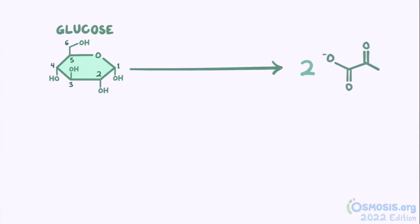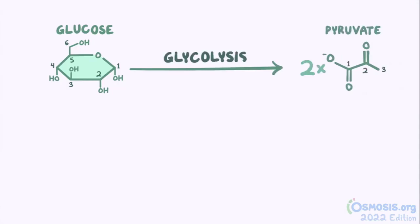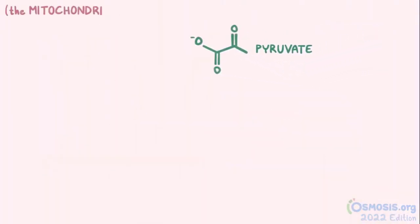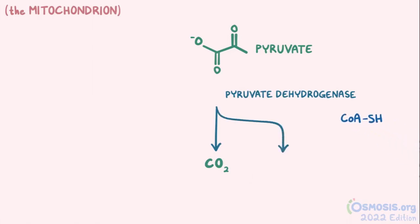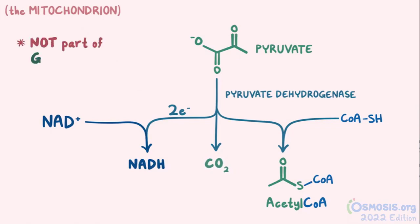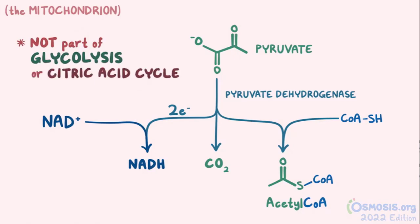Taking the case of glucose: after a meal, one glucose — a 6-carbon molecule — splits into two 3-carbon pyruvate molecules through glycolysis, which happens in the cytoplasm of the cell. Each pyruvate molecule then enters the mitochondria, where an enzyme called pyruvate dehydrogenase snatches a carbon and two oxygens from pyruvate and adds coenzyme A, making acetyl-CoA. Two electrons are transferred to a nearby NAD+ as a hydride ion, making NADH, while the carbon and two oxygens are released as CO2. This step links glycolysis to the citric acid cycle, but isn't considered part of either process.